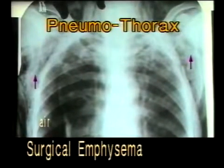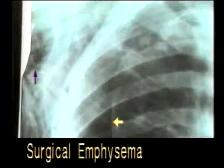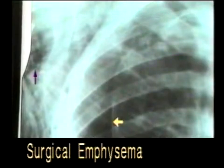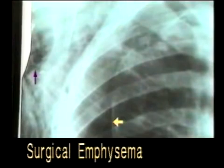In this X-ray, note the pneumothorax on the right side and note the air in the subcutaneous tissues shown by the black arrows. The air in the subcutaneous tissues is termed as subcutaneous emphysema. The black arrow shows the air delineating the subcutaneous tissues and the muscles, and the white arrow marks the lung border, lateral to which is the radiolucent shadow of pneumothorax.